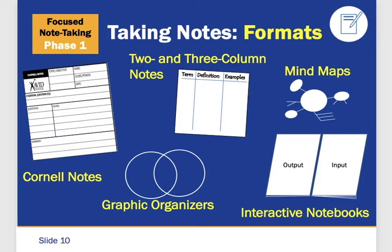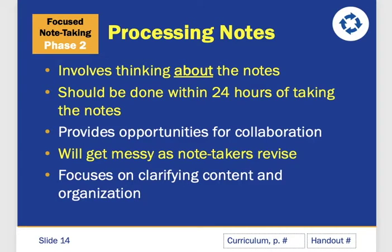I'm going to go ahead and go to my next slide. In your question section of your Cornell notes, you can write: what is phase two, or what are the components of phase two? Phase two is processing the notes. Remember, the things in yellow are what I would really like you to put down, and you can shorten these — you could combine bullet points one and two and say something like: make sure to think about the notes within 24 hours of taking them.